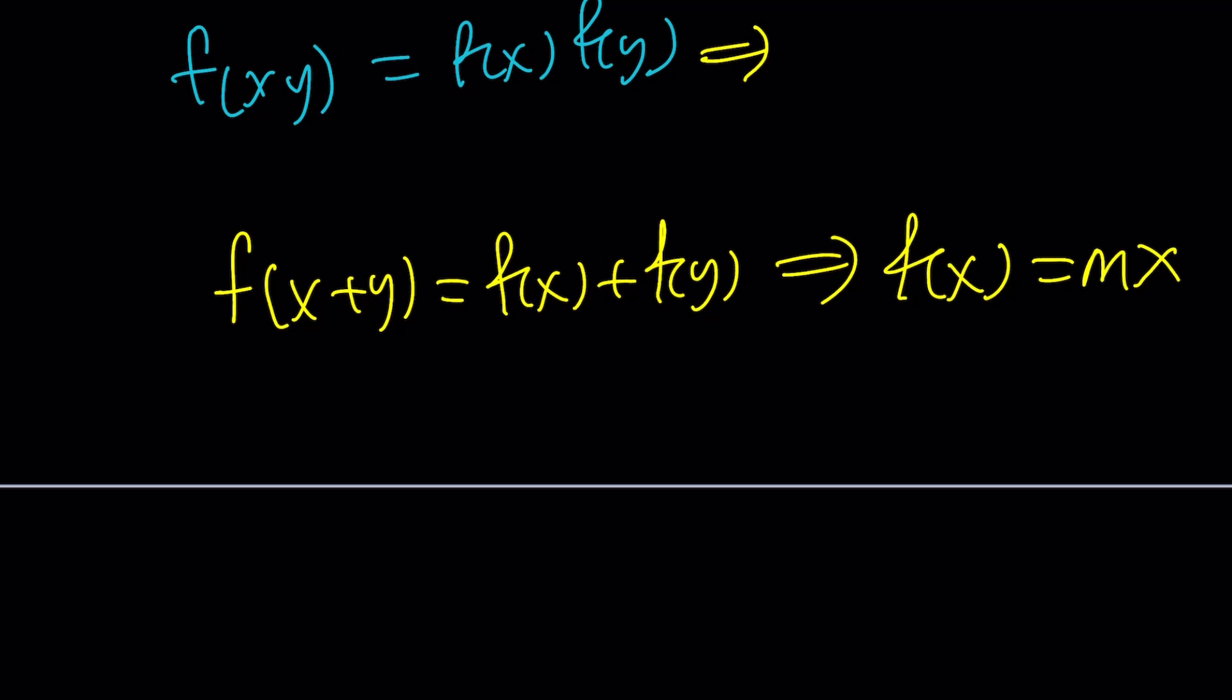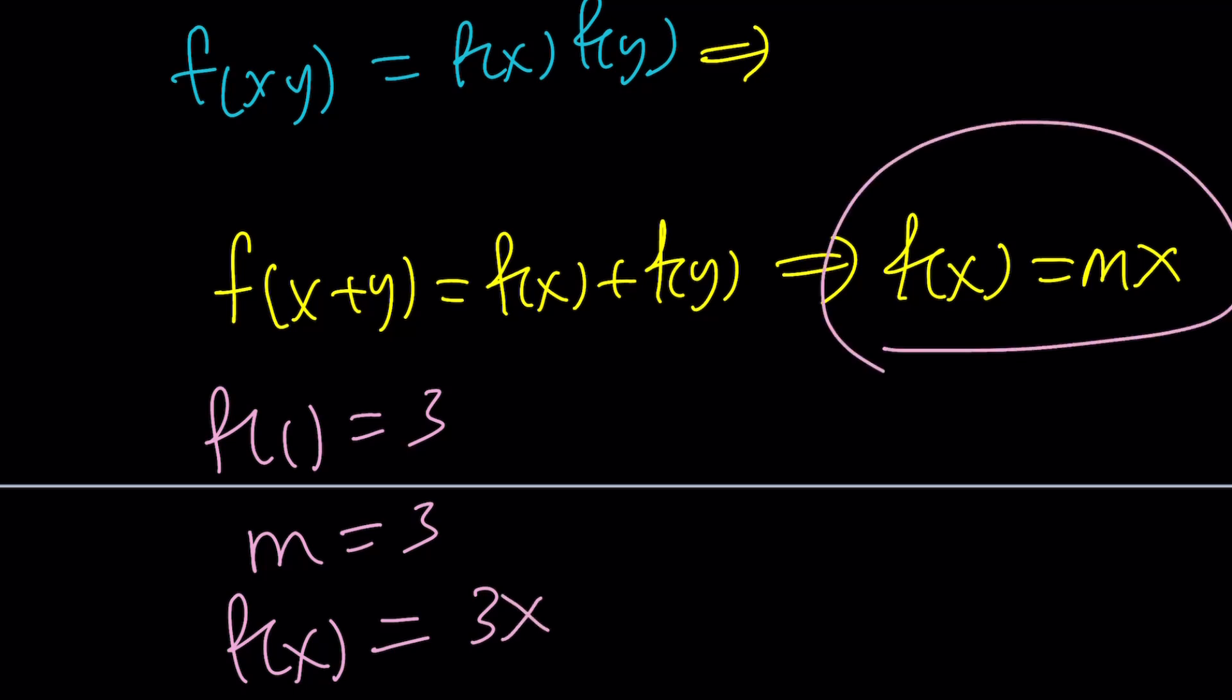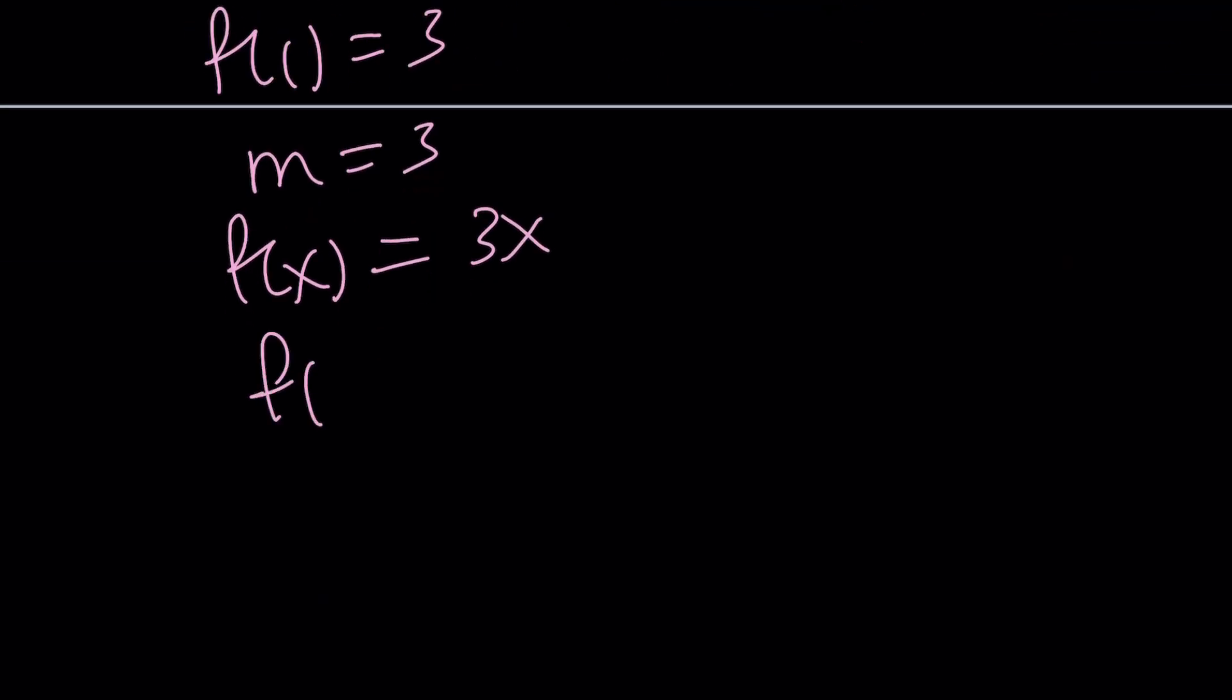Now, how do you find m? We are given f of 1 equals 3. f of 1 is just m, so m equals 3. And this implies f of x equals 3x because f of x is mx. And since f of x is known, now I can find f of 7. 3 times 7 is 21. This is why the 3 times rule worked for this particular function.